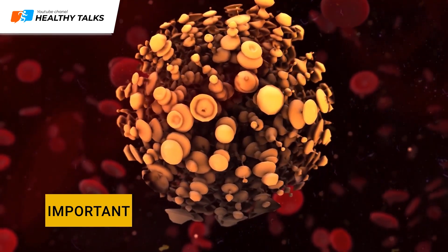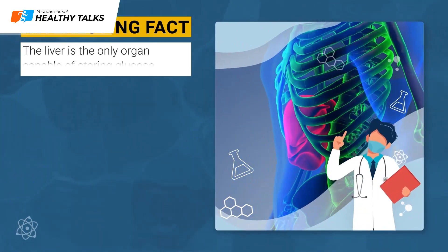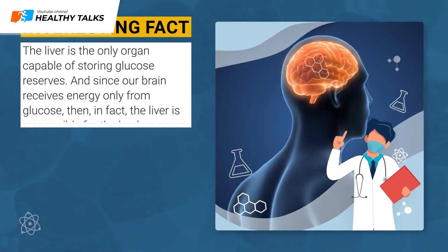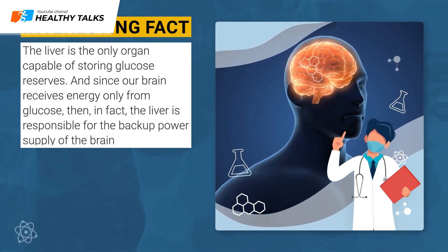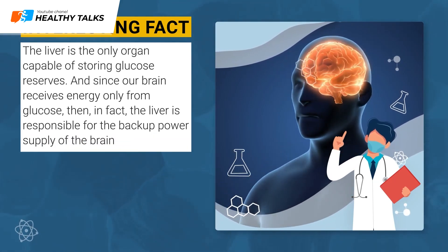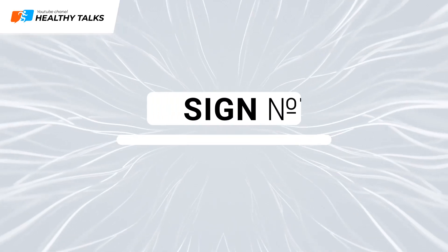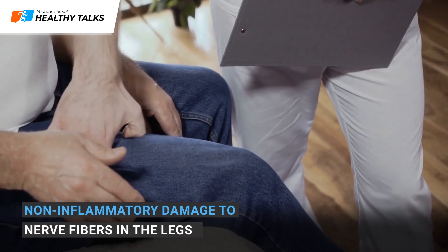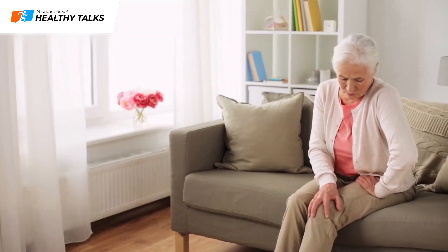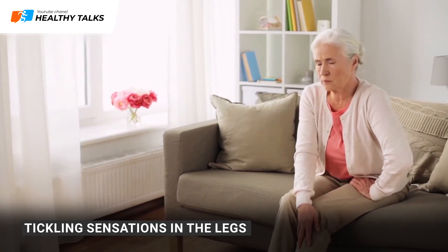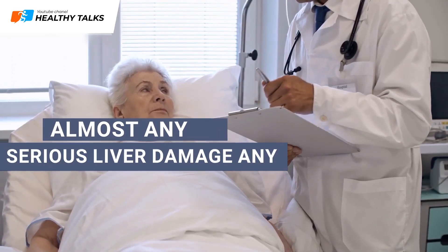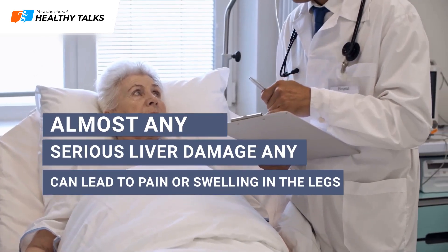The liver is the only organ capable of storing glucose reserves, and since our brain gets energy only from glucose, the liver is responsible for the backup power of the brain. Sign 7: Pain in the legs. Liver disease often causes non-inflammatory damage to nerve fibers in the legs. With hepatic pathologies, tickling sensations or unexplained pain in the legs may occur.